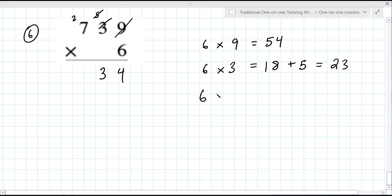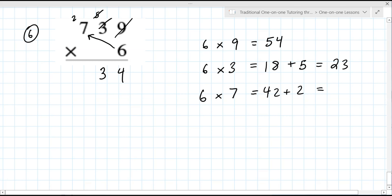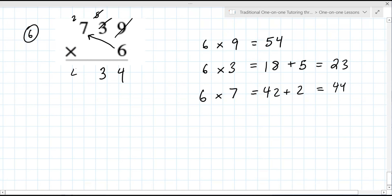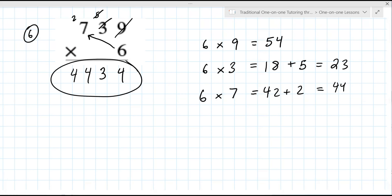Now you're going to take that 6 and multiply it by 7. What is 6 times 7? 42. Plus the carry of 2 is? 44. And since we're all the way at the end, we can now just write that as our final answer. So that's what you're looking for when you go back to this one.